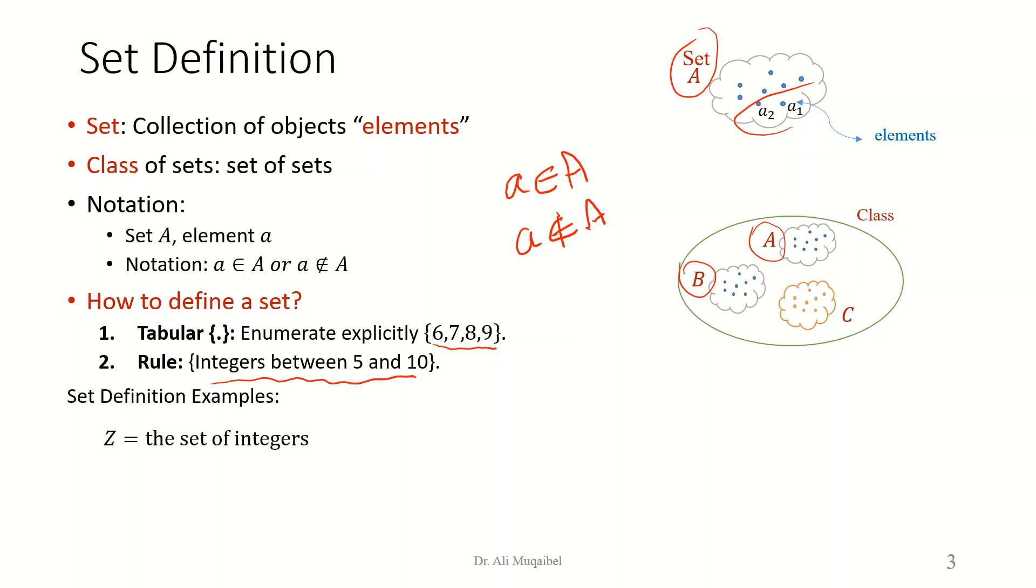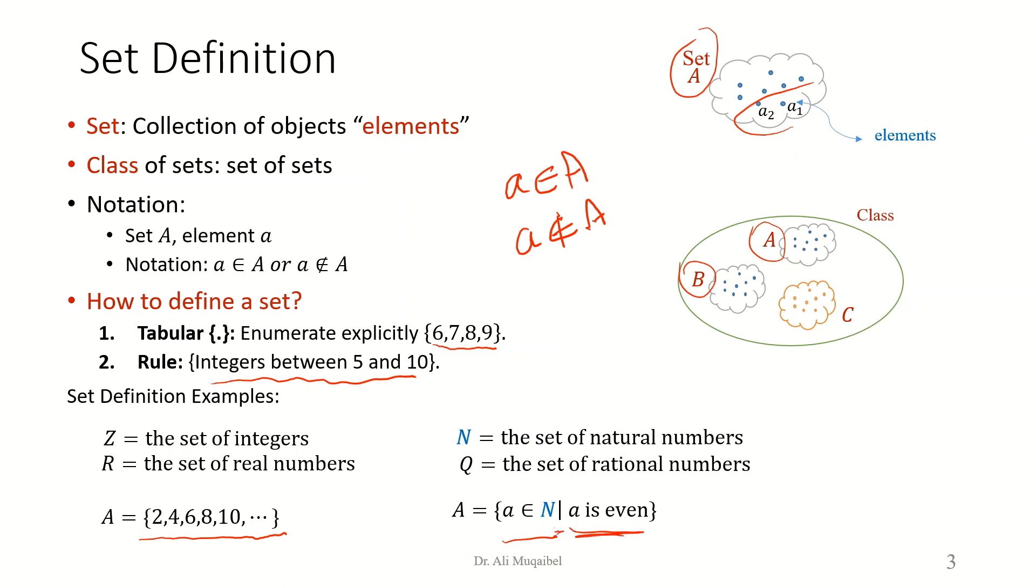Here are some examples. For example, Z is a set of integers. N is a set of natural numbers. R, real numbers. Q, rational numbers. And we can give you some examples by looking at a tabular definition. If you look at the even numbers, we can say that A is 2, 4, 6, 8, 10, and so on. Equivalently, we can use the rule way of defining a set by saying A is all the natural numbers, given that a is an even number. These are defining the same thing in two different ways.